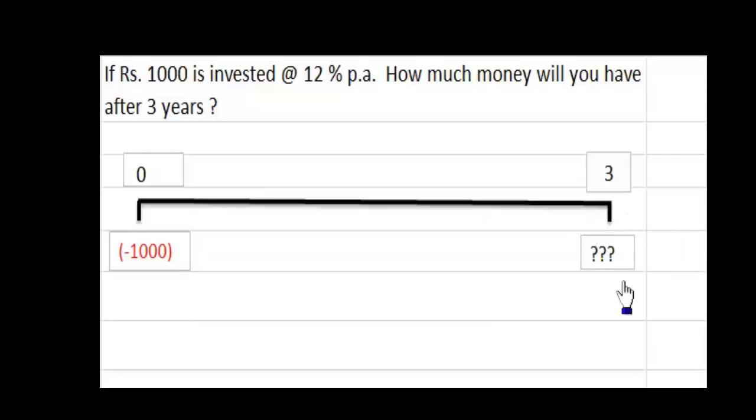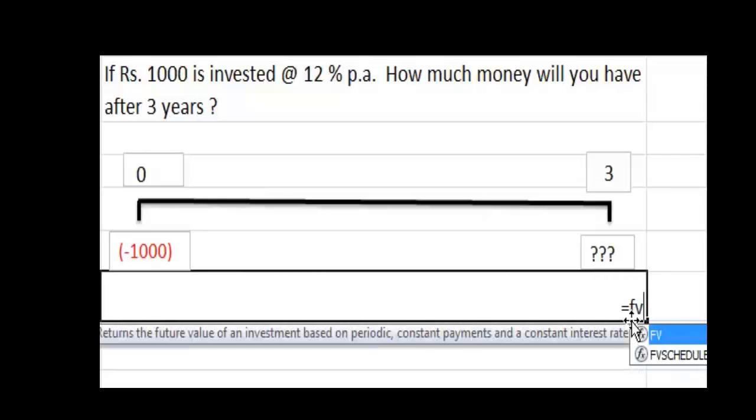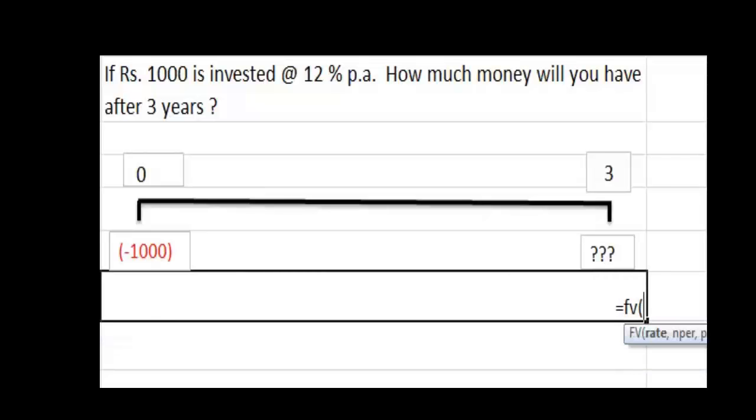So this is the question, what is the future value. Let us calculate it now using our Excel function equals future value. Now as we type this it is asking us for the information. The first thing that we are being asked for is the rate. Let's key in the rate 12%, make sure to put the percent.